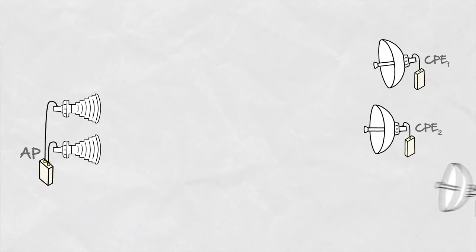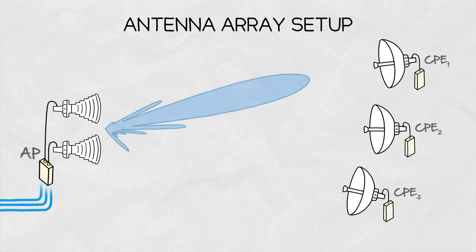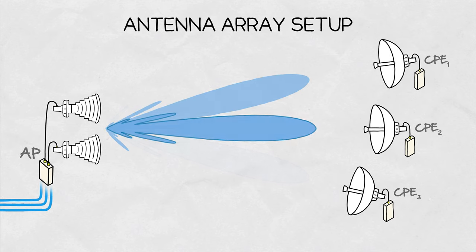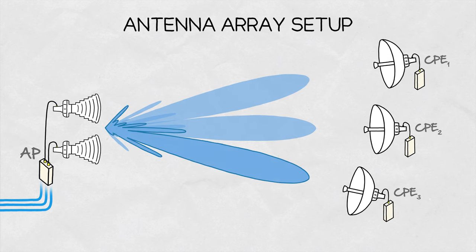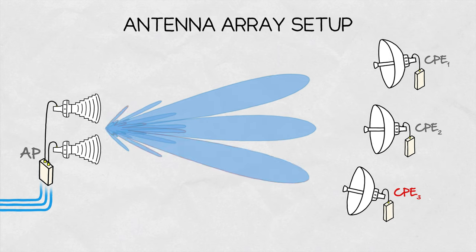Depending on the number of the client stations, there is a corresponding number of independent data streams the access point works with. For each data stream, the antenna array is configured such that the main beam of the radiation pattern is aimed at the corresponding client station. So the individual setup of the antenna array is different for each client station.